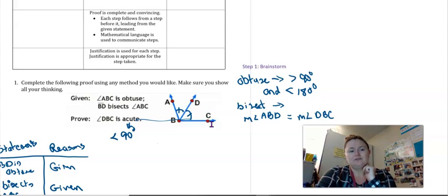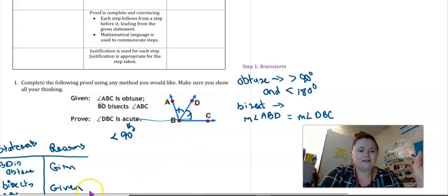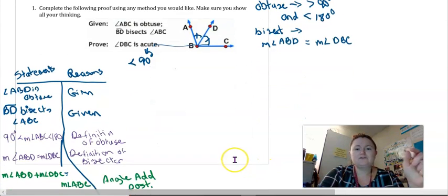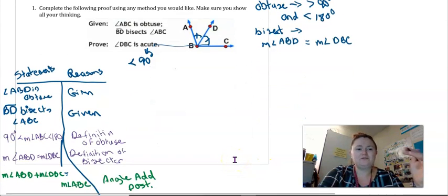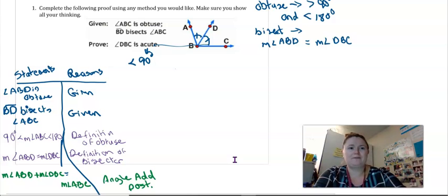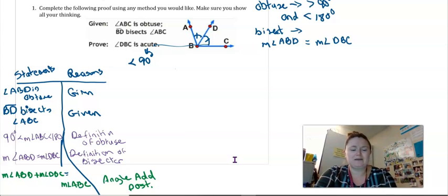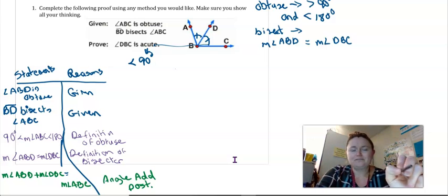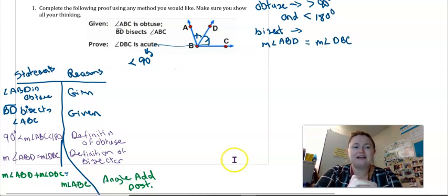So let's break down what a proof for this would look like in a flowchart format. So with a flowchart format, I still need to start by writing my givens. So I'm going to start, but I'm going to do it. I like to do that then side by side.